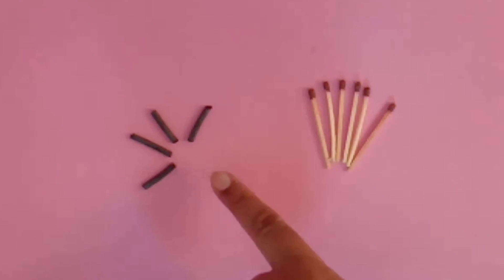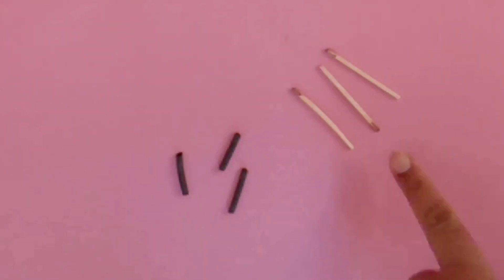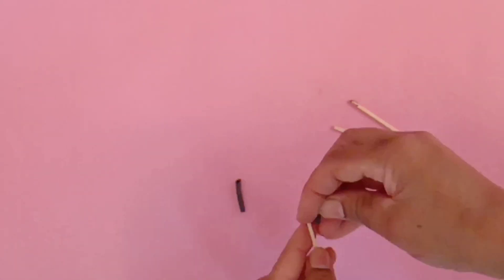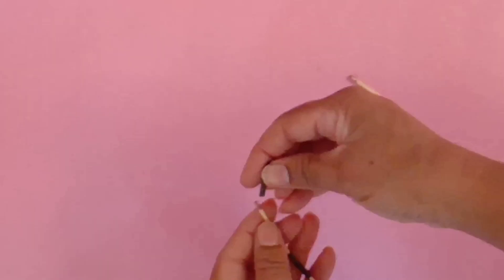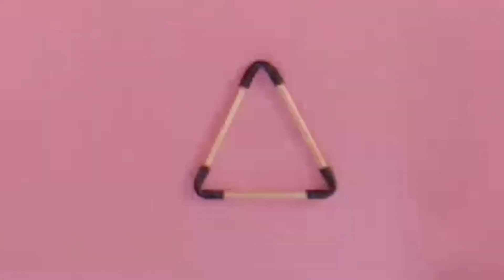Collect some rubbers from the valves of a cycle tube and some matchsticks. Now, remove the black part of the matchsticks. Take three matchsticks and three rubber valves and join them. After joining three matchsticks and three valves of the cycle tube, a triangle is formed like this.